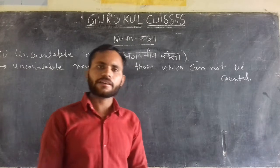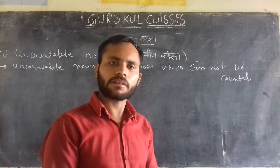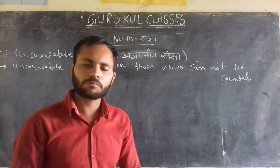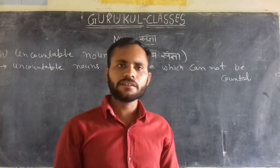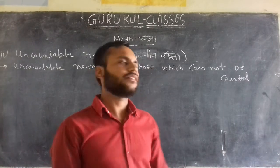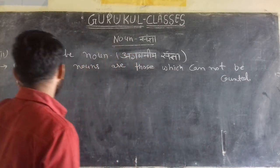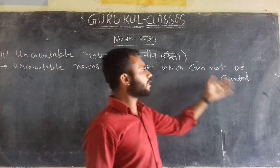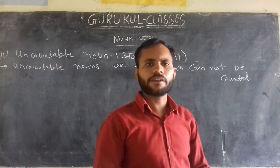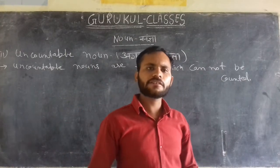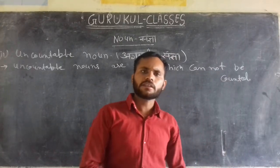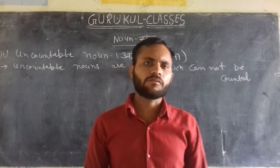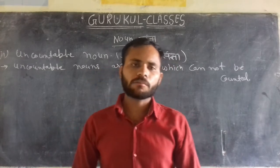Next, we can look at uncountable nouns. Uncountable nouns are those which cannot be counted and can only be used in one form, because they don't have a countable plural form.